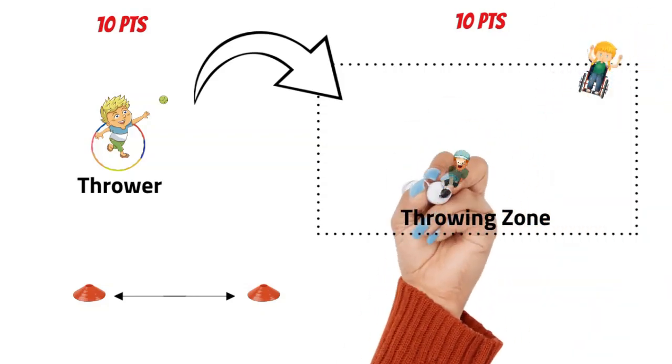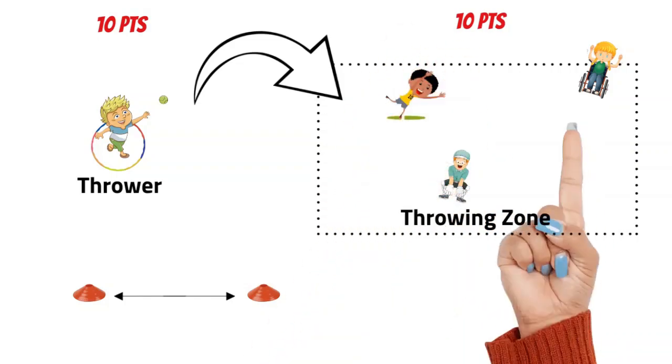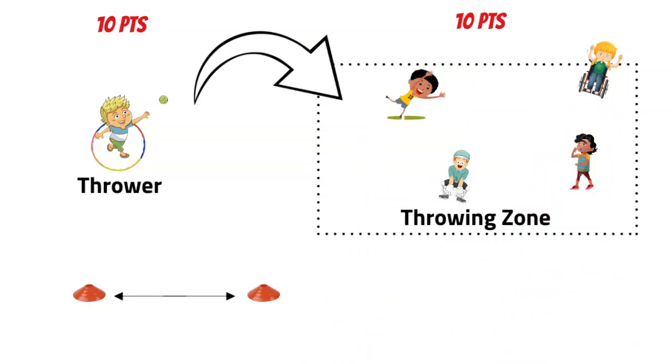The thrower then sets off and starts running around the cones. The thrower scores a point each time they run to the cone and back.